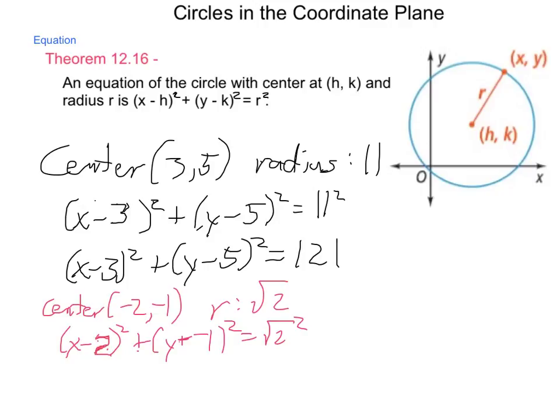Now, let's simplify. What happens when we subtract a negative 2? We get (x + 2)² plus, what happens when we subtract a negative 1? It becomes addition, so we have (y + 1)² equals, what is the square root of 2 squared? It is simply 2. So not all radii will be nice, convenient numbers. Sometimes we end up with items that do come out as irrational numbers.